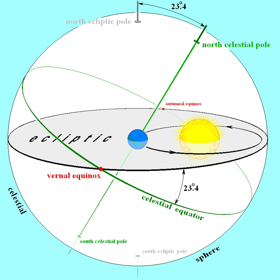J. Laskar computed an expression to order t¹⁰ good to 0".04 over 10,000 years. All of these expressions are for the mean obliquity, that is, without the nutation of the equator included. The true or instantaneous obliquity includes the nutation.